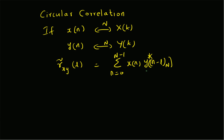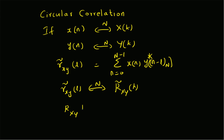When compared to circular convolution, the key difference here is that y of l minus n becomes y of n minus l mod N. That is the reversal of the time coordinate for the second signal, and there is of course this conjugate. The DFT of the circular correlation, R̃_xy of k, is equal to the product of X of k and Y of k conjugate. That is the DFT of the circular correlation.